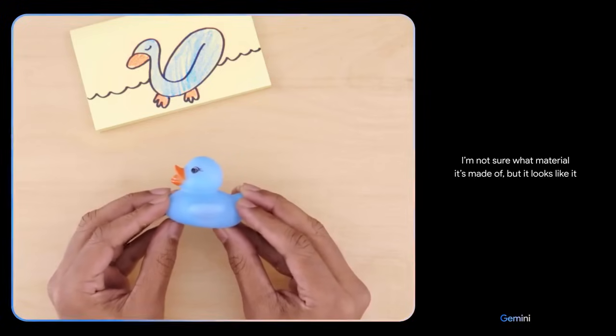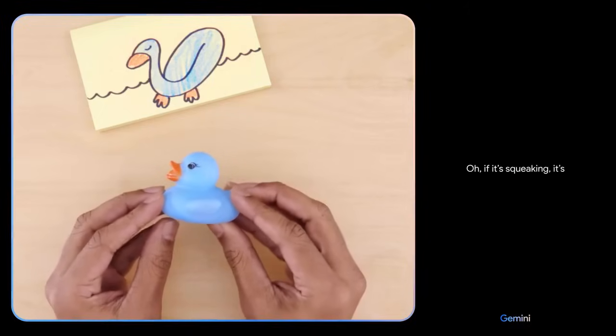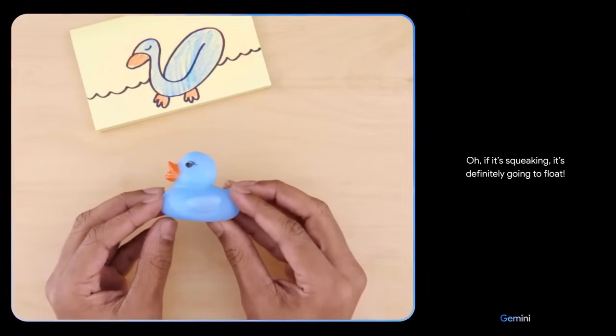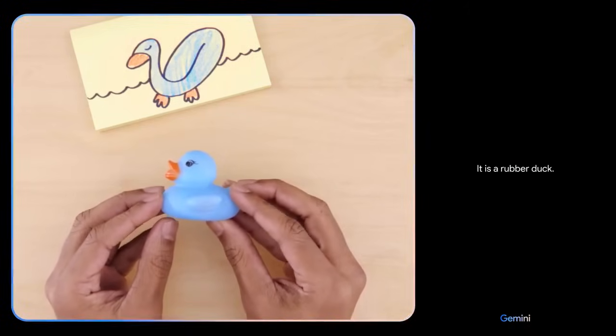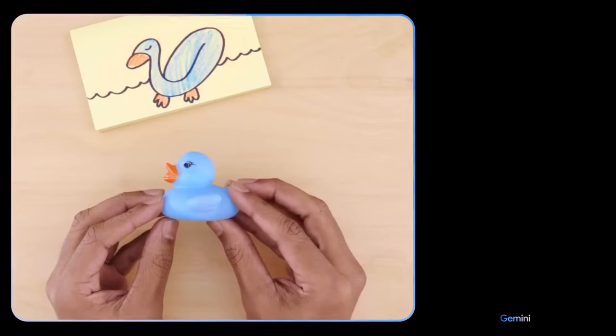Would this float? I'm not sure what material it's made of, but it looks like it might be rubber or plastic. What if I tell you it's making a squeaking sound? Oh, if it's squeaking, it's definitely going to float. Nice. It is a rubber duck. It is made of a material that is less dense than water.